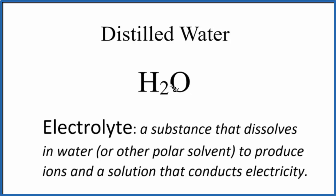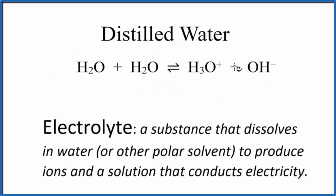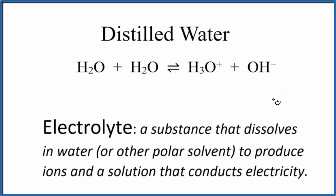If we have just pure water, a few molecules come together and produce H₃O⁺ and OH⁻. Those positive and negative species are ions. So we do have ions in the solution, just not very many of them.